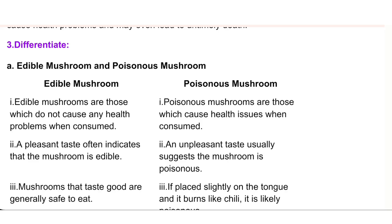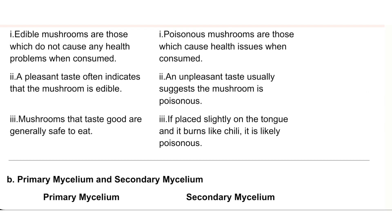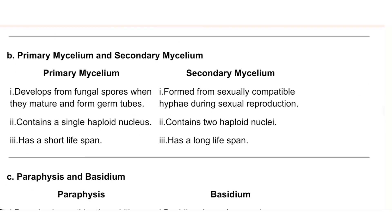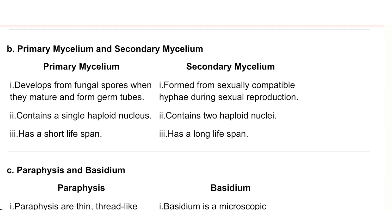(b) Primary mycelium and secondary mycelium. Primary mycelium: develops from fungal spores when they mature and form germ tubes; contains a single haploid nucleus; has a short life span. Secondary mycelium: formed from sexually compatible hyphae during sexual reproduction; contains two haploid nuclei; has a long life span.